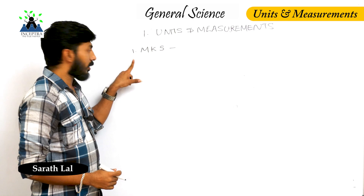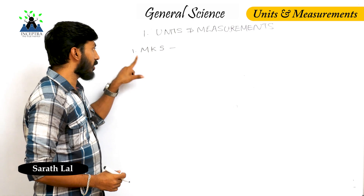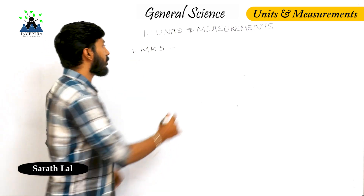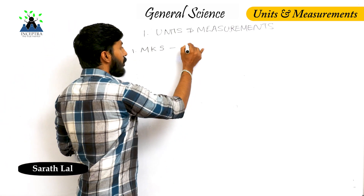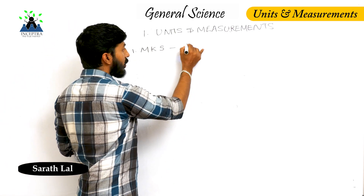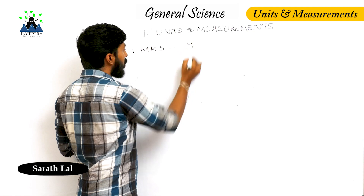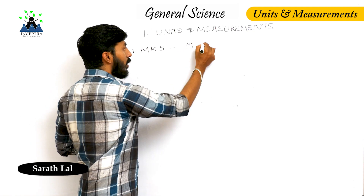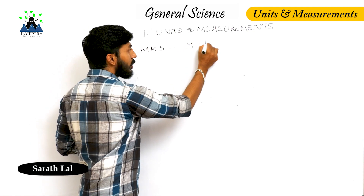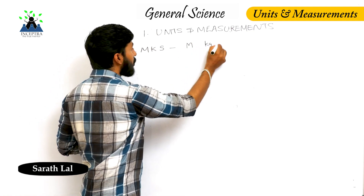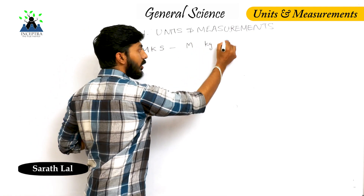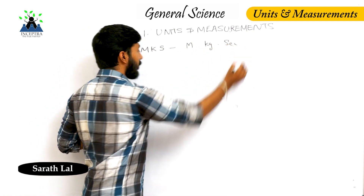In the MKS system, the length measuring unit is meter, mass measuring unit is kilogram, and time measuring unit is second.